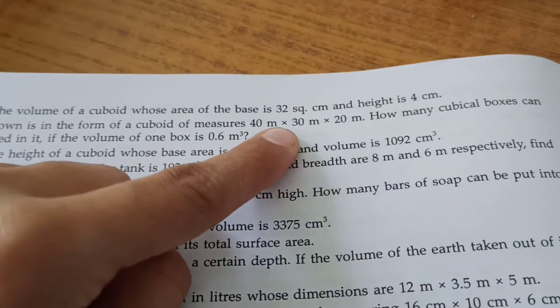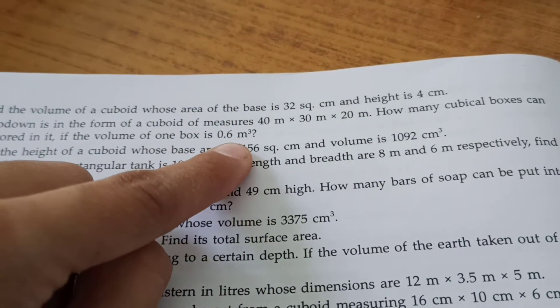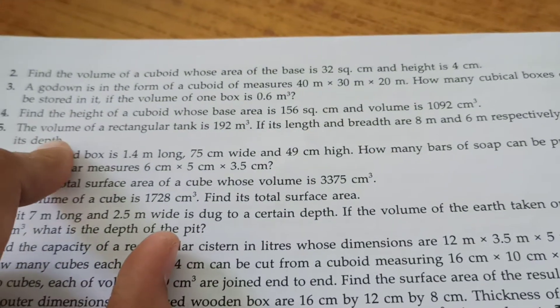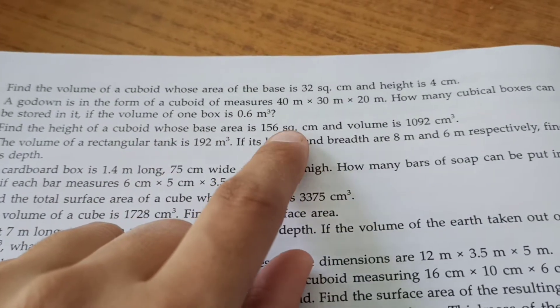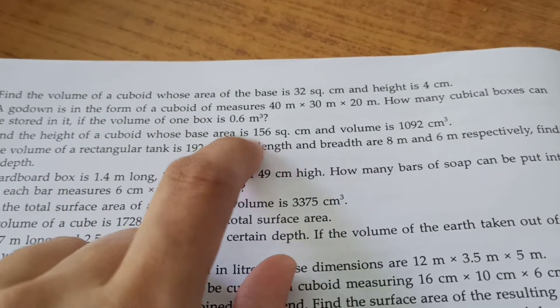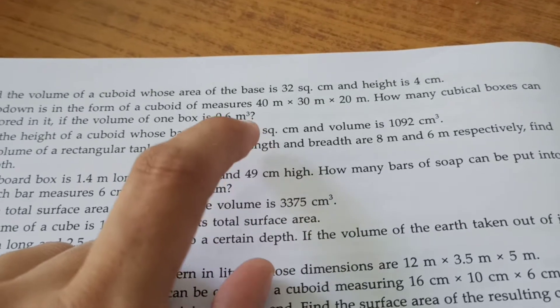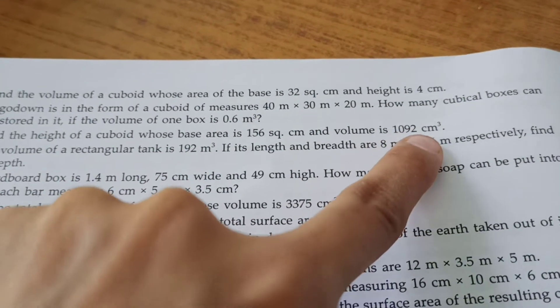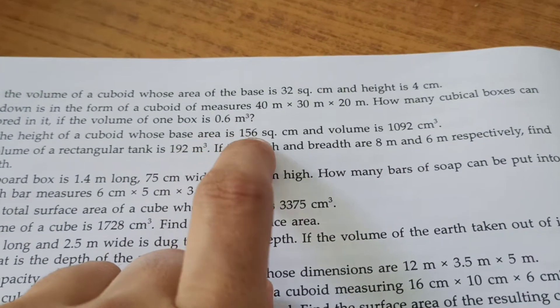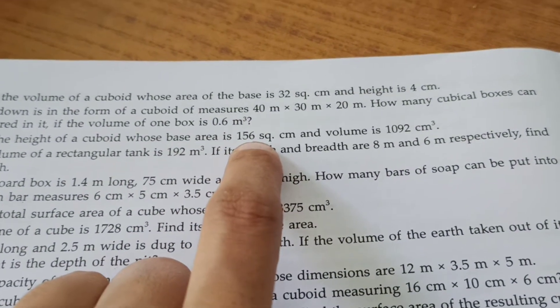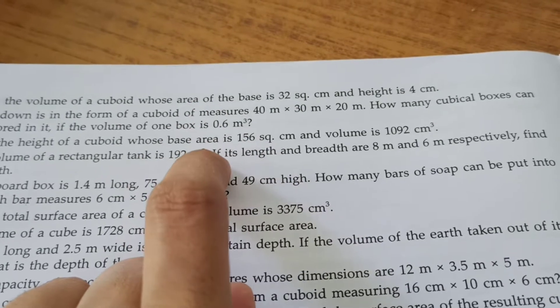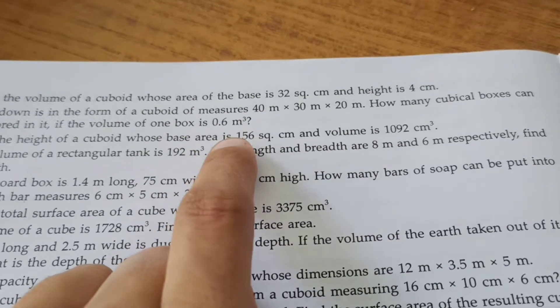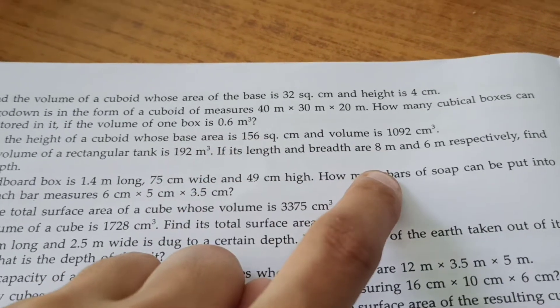Now find the height of a cuboid whose base area is given - that is, length into breadth is given to us - and volume is also given. So volume divided by length into breadth gives us the height, because volume of cuboid equals length into breadth into height. Length into breadth is given to us, so we'll get height.